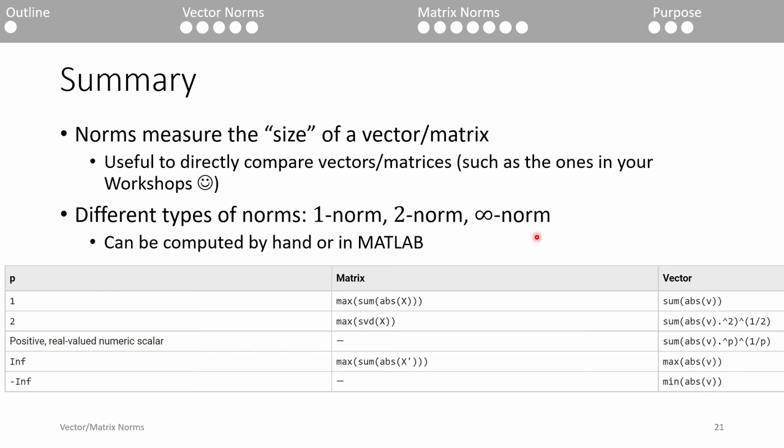To conclude, norms provide a handy metric which directly enables matrix and or vector comparisons. There are three main types of norms, the 1, 2, and infinity norm. You can calculate them by hand pretty readily for small matrices and vectors, or you can use the norm function in MATLAB instead. Thanks and see you next time.